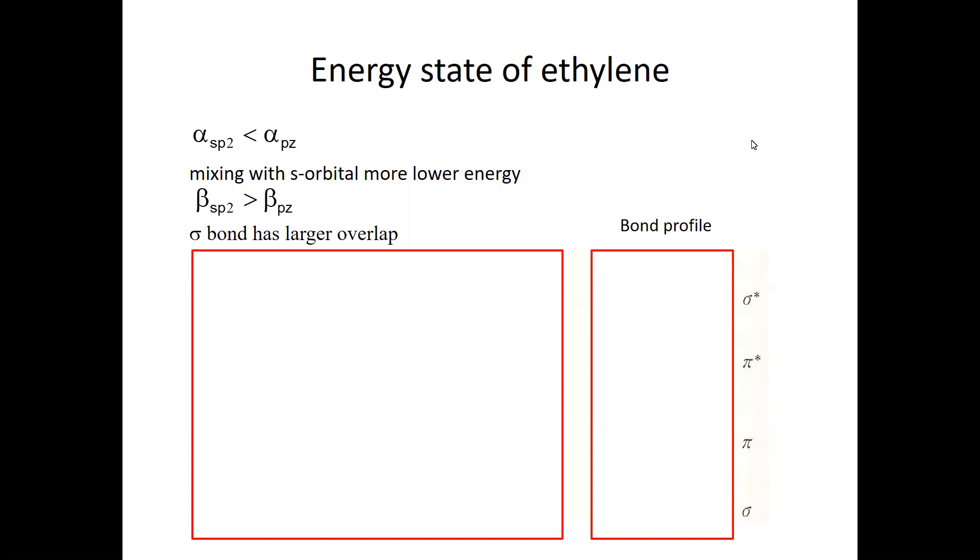So again, think about the carbon 5 side and the carbon 6 side, and thinking about the energy level. Energy. And each one of the carbon has the two different atomic orbitals.